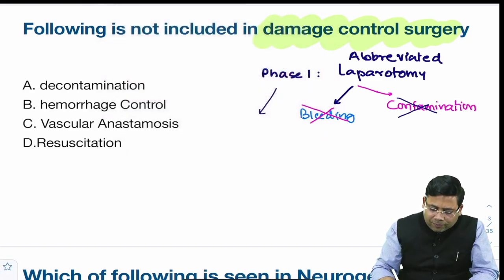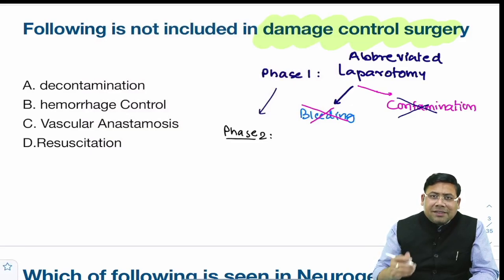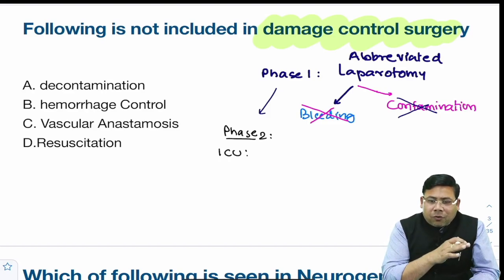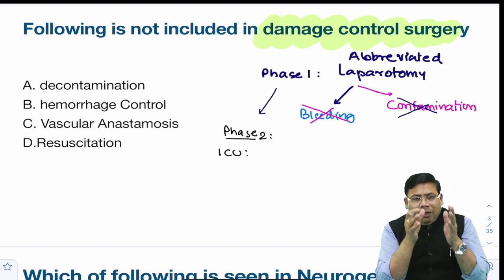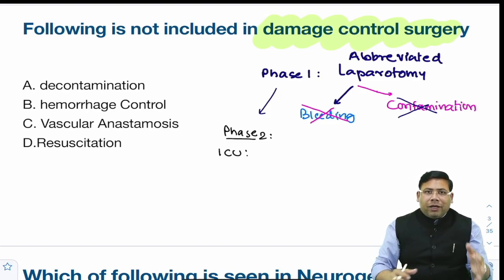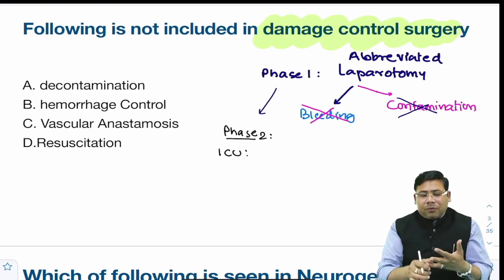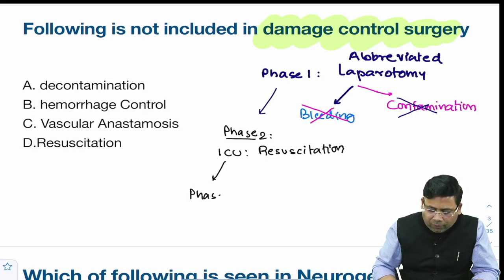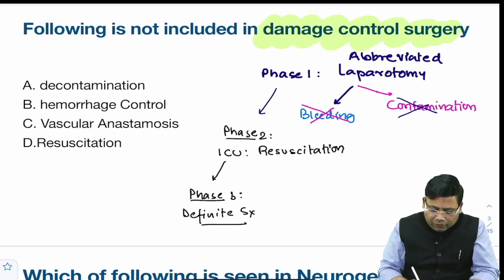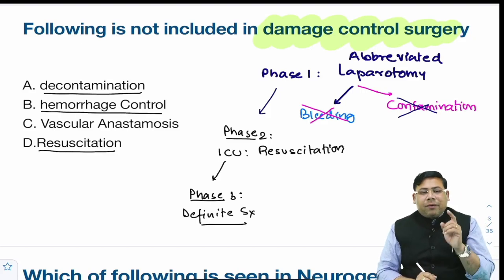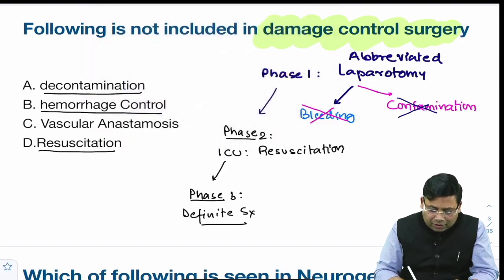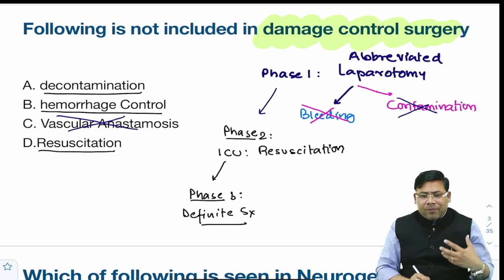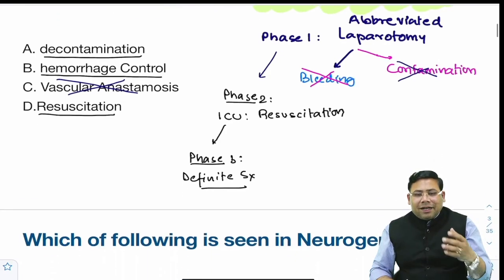Contamination is controlled by thorough lavage and placing drains. We don't go for permanent closure — we go for temporary closure. Phase two is in the ICU, where the patient is made physiologically stable. There is something known as the lethal triad — acidosis, hypothermia, and coagulopathy — resulting from ongoing injury. In the ICU, resuscitation is done. Phase three is definite surgery: resuscitation, decontamination, and hemorrhage control. Vascular anastomosis is NOT done in damage control surgery — it is done in definitive surgery.